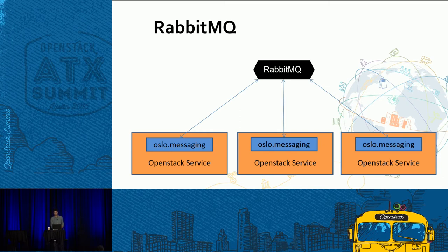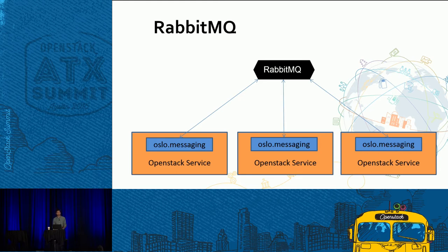RabbitMQ is pretty much the foundation for everything in OpenStack — it's how all the services communicate with each other, whether it's launching an instance or handling metering. All the communication mainly goes through RabbitMQ. There are other options, but most deployments use RabbitMQ. It's a broker-based messaging service, meaning when you send a message it goes to a broker first, which dictates where the message will end up going.